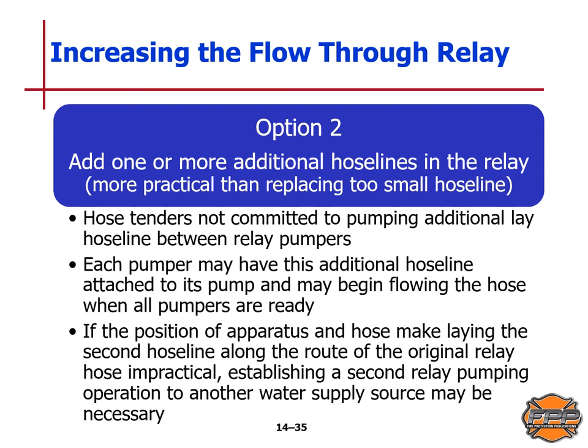Option two for increasing flow through the relay is to add one or more additional hose lines in the relay. This is more practical than replacing hose line that is too small. Hose tenders can lay additional hose line between relay pumpers. Each pumper may have this additional hose line attached to its pump and may begin flowing the hose when all the pumpers are ready. If the position of the apparatus and the hose make laying the second hose line along the route impractical, establishing a second relay pumping operation to another water supply source may be necessary.